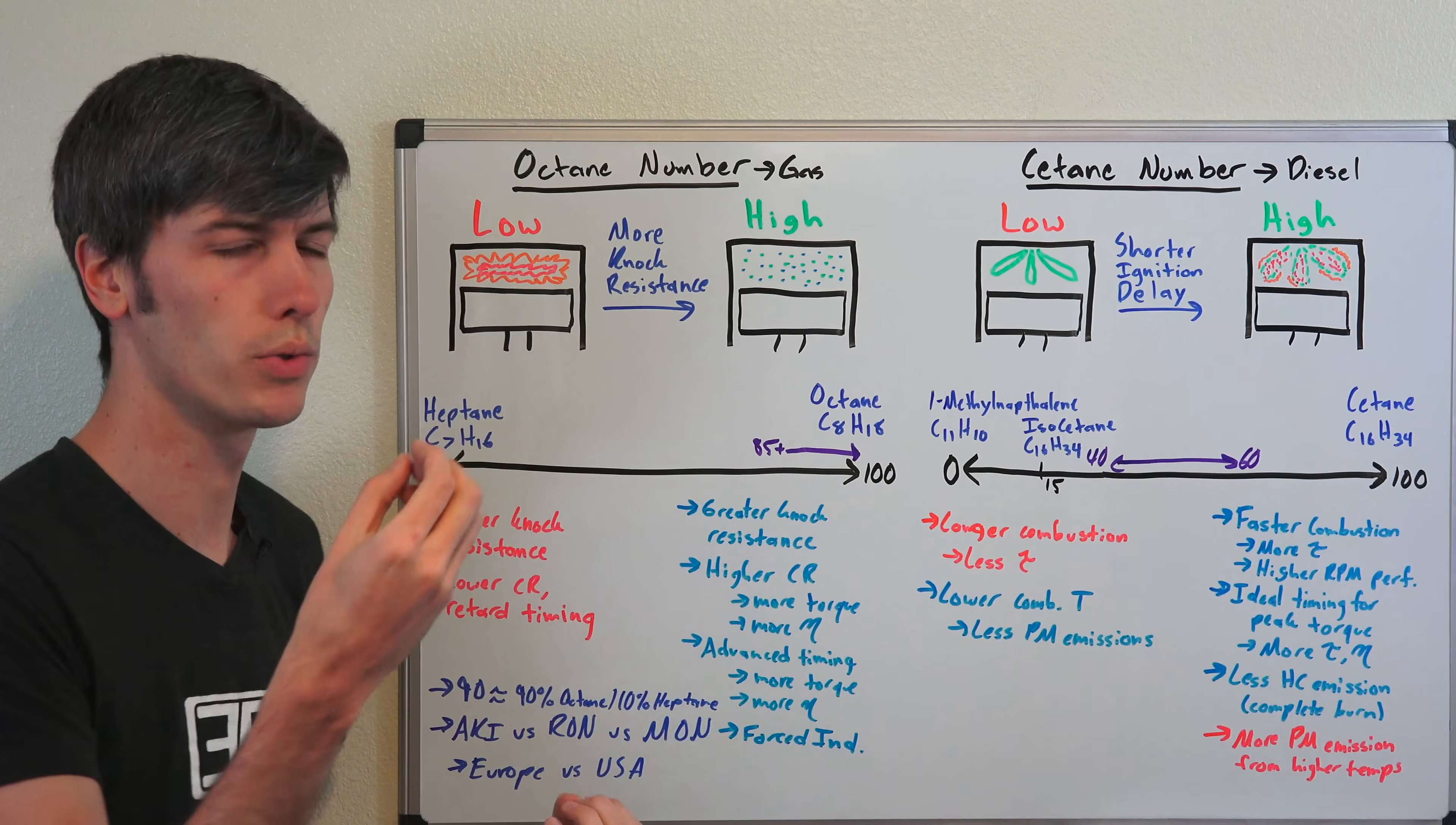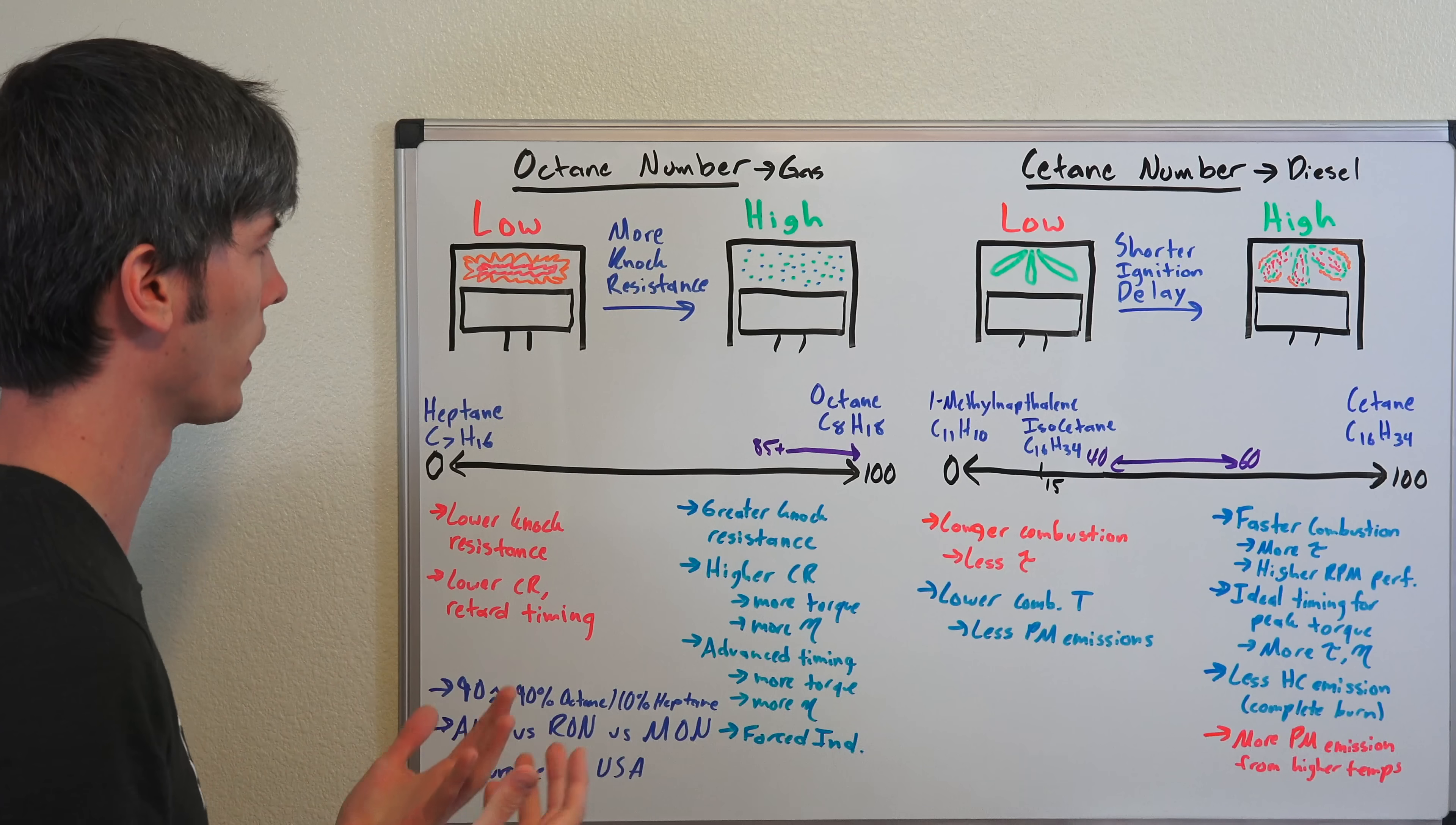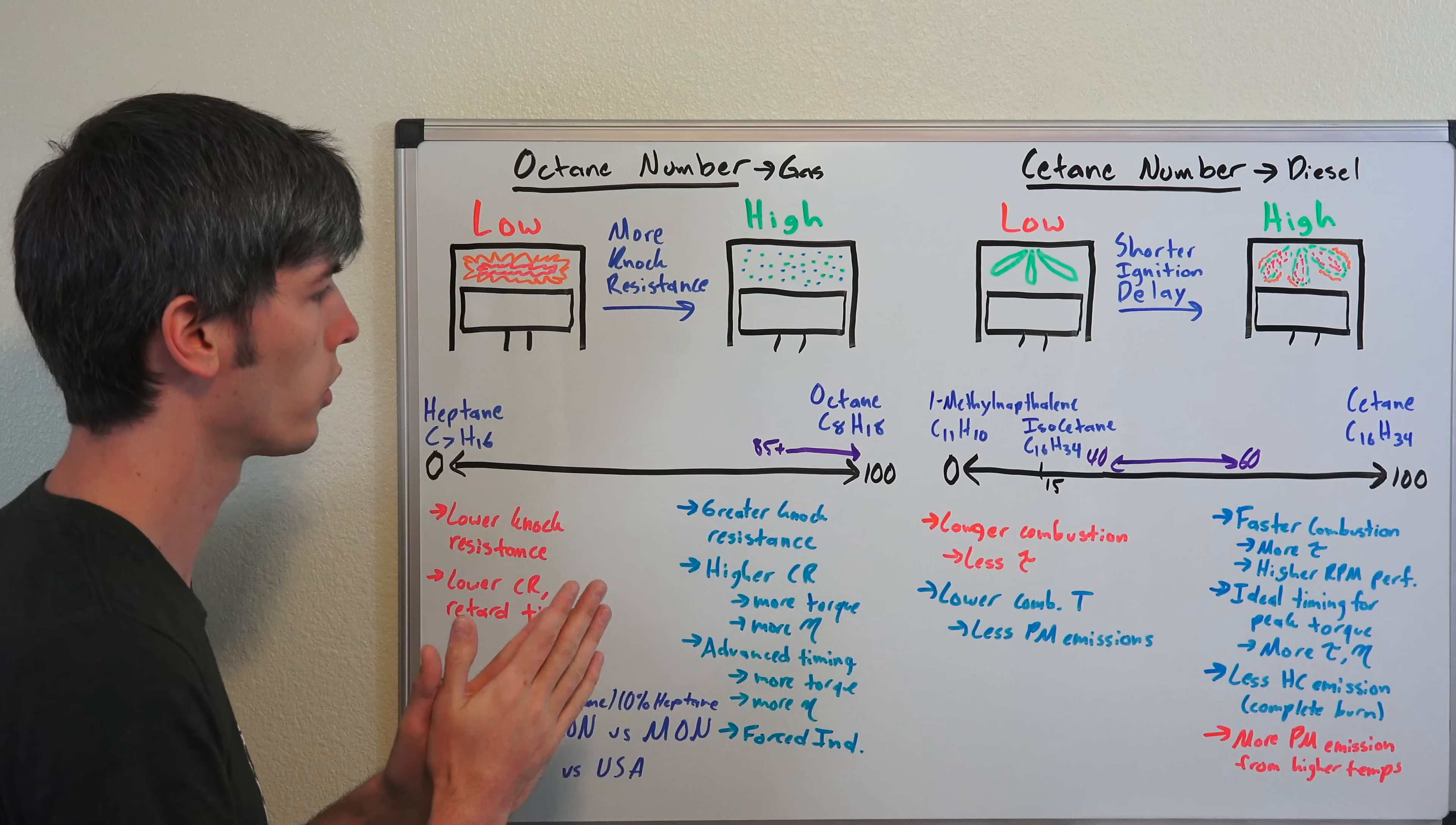In gasoline engines, we want to use a spark plug to start ignition, not compression, unlike diesel engines. So a high octane rating is a good thing. Our rating scale goes from 0 to 100, and you can go over 100.